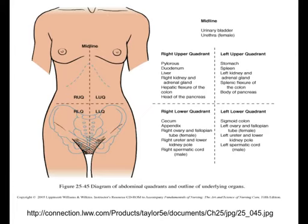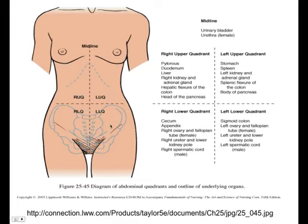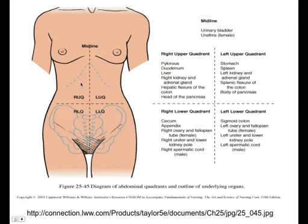As therapists, this is what we really want to know because this is where we will intervene and use this to screen for disorders. You can divide the abdomen into four quadrants: a right upper quadrant, a left upper quadrant, a right lower quadrant, and a left lower quadrant. In the right upper quadrant, you're going to find the pylorus, duodenum, liver, right kidney, hepatic flexure of the colon, and head of the pancreas.